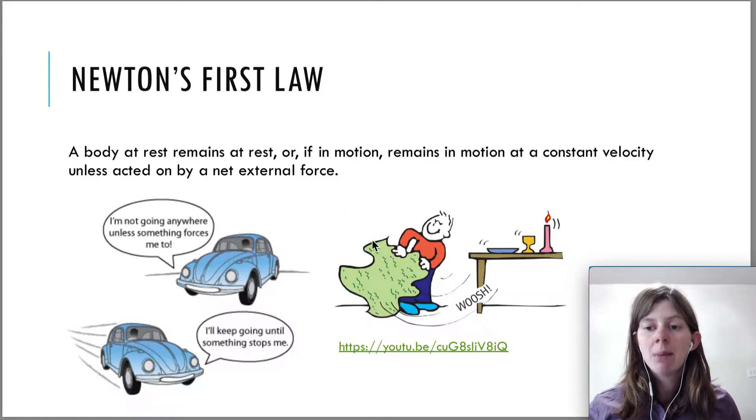Now this demo here of the tablecloth is often done to demonstrate Newton's first law. However, it's not a perfect example. You can see this video link here that will show you a person doing this demo. There are many demos on YouTube. Just google tablecloth and Newton's first law. So what happens here is that if you pull the tablecloth quickly enough, and you've probably seen magicians perform this trick, the silverware and all the stuff on top of the table doesn't move.